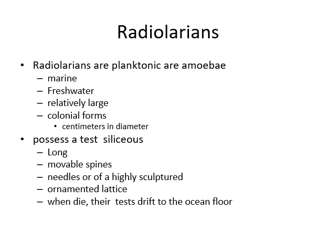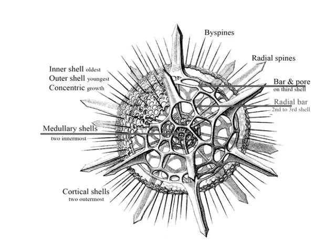Radiolarians are also planktonic like heliozoans and amoeba, living in marine water and sometimes in fresh water. They can be relatively large when forming colonies, with colonies reaching several centimeters in diameter. They possess a test made of siliceous material, whereas foraminiferans have calcareous tests. Radiolarians have long movable spines or highly sculptured ornamental structures, and when they die their tests drift to the ocean floor. The diagram shows a radiolarian with inner shell, outer shell, and growth zones.